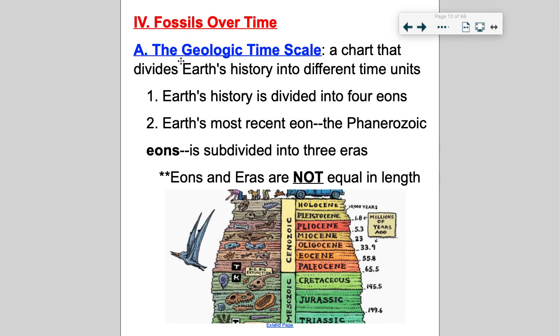Fossils over time — to look at Earth's history, that's a lot of numbers. Earth is 4.5 billion years old, so scientists divide Earth's history into different time units.